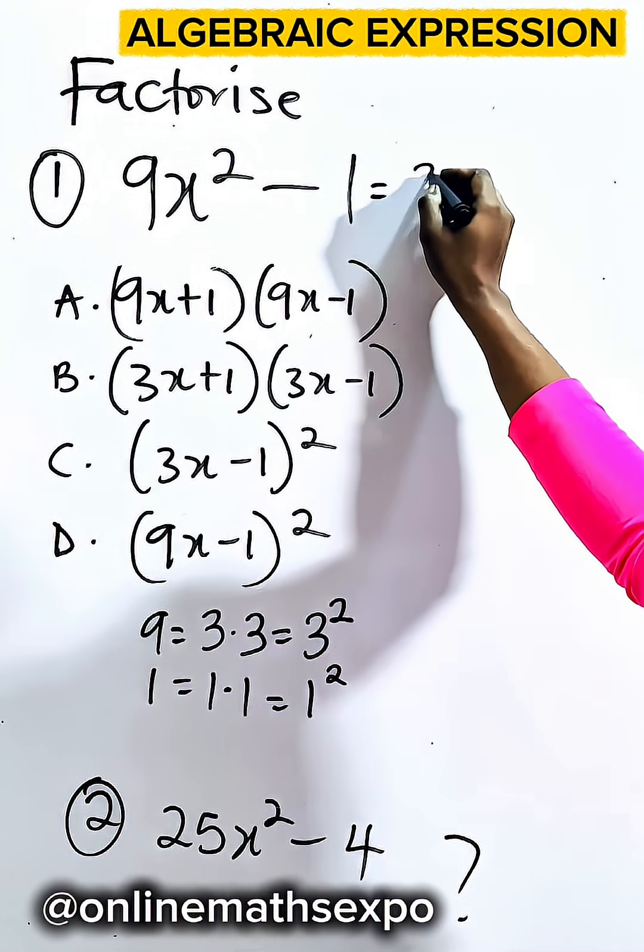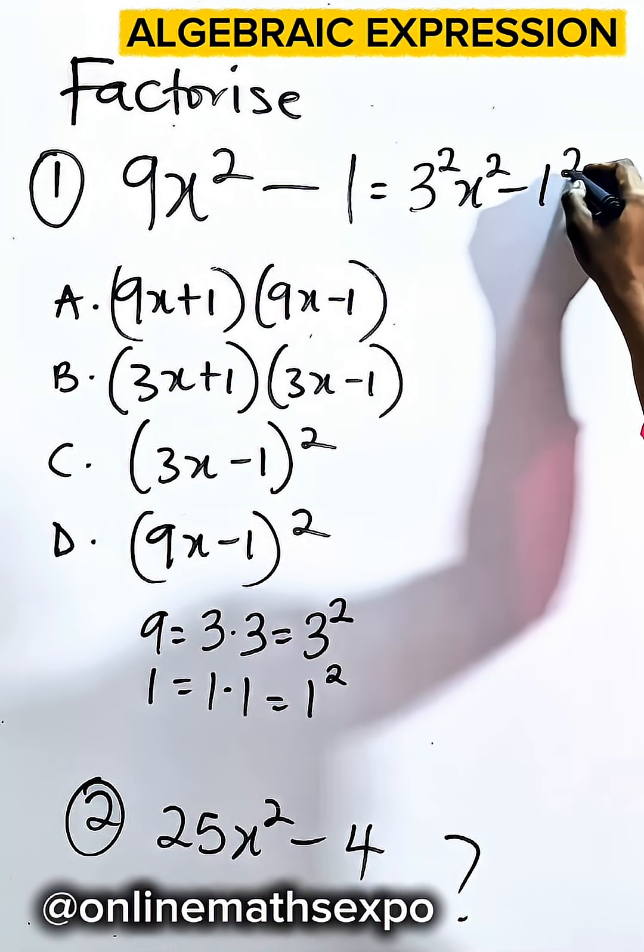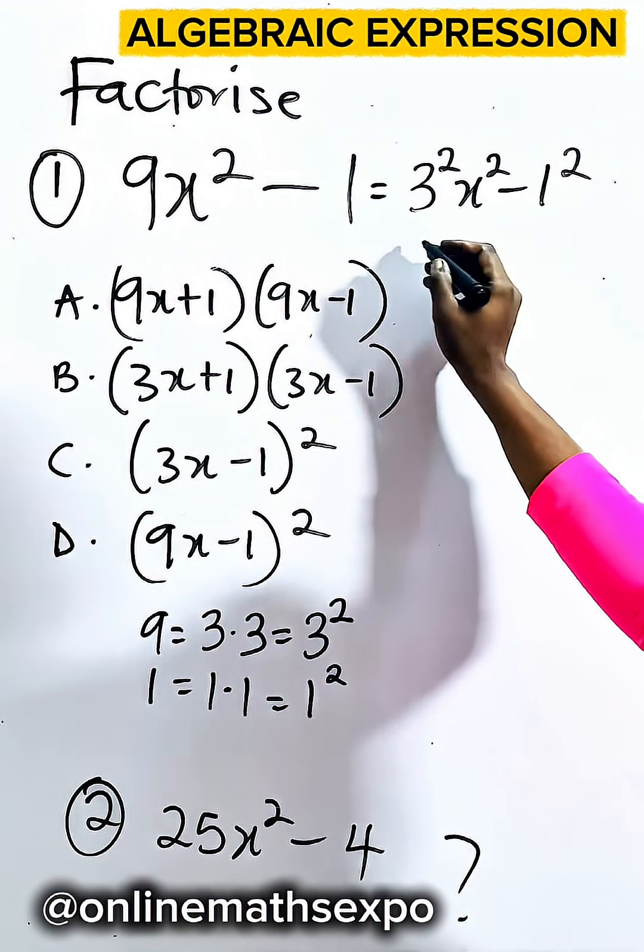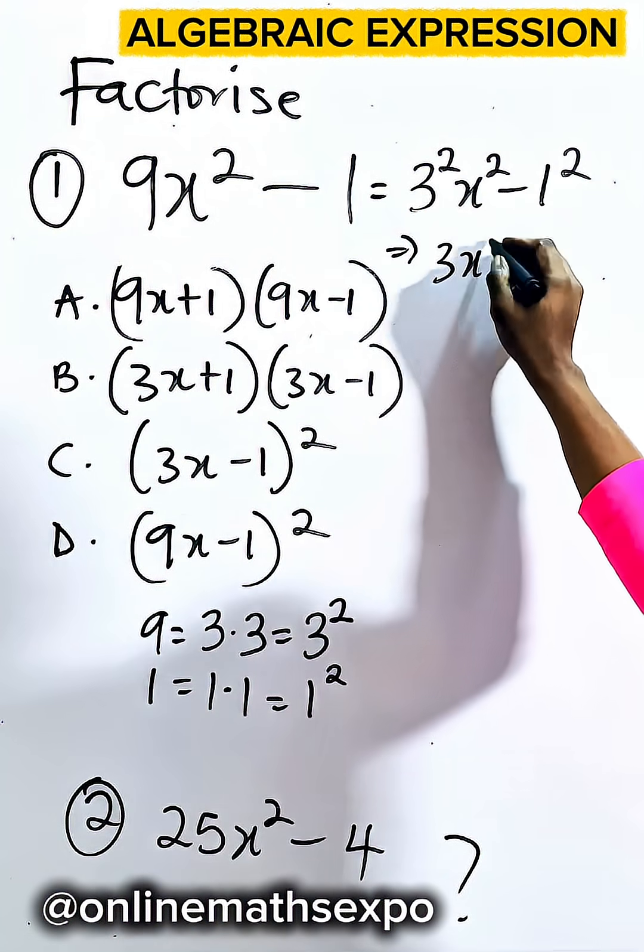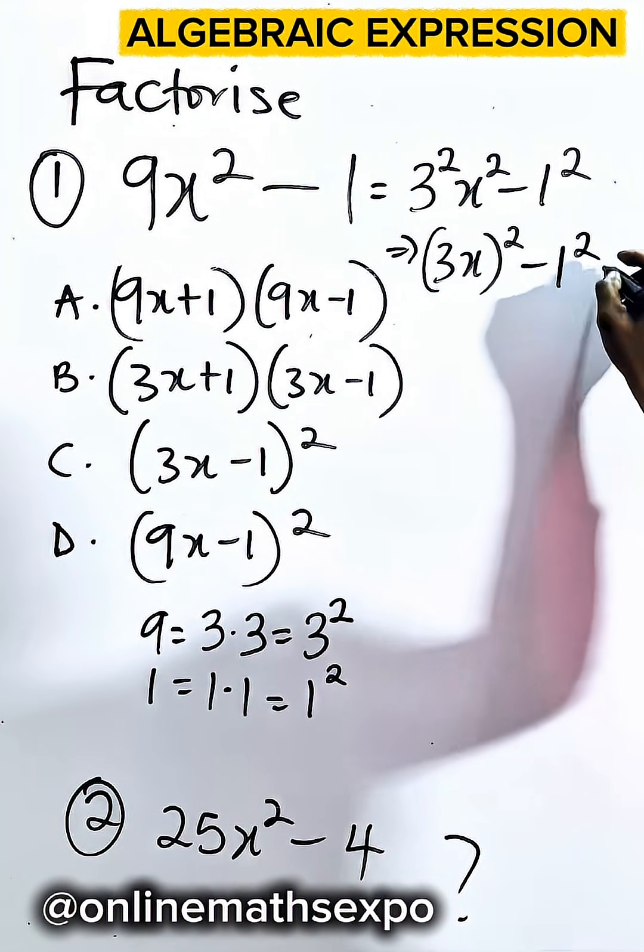This is the same as 3 squared, then x squared minus 1 squared. And this is the same as 3x will have a power of 2 minus 1 squared.